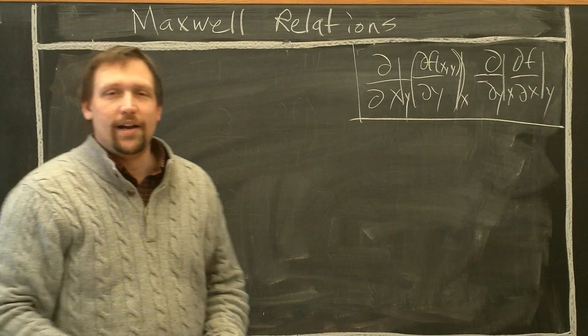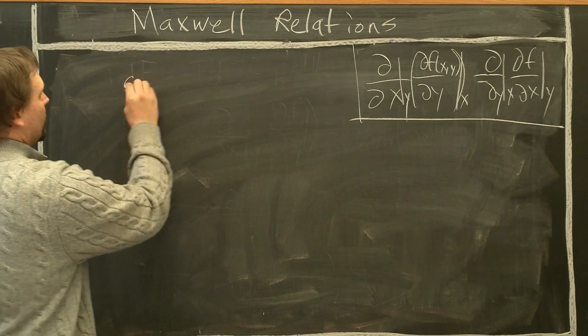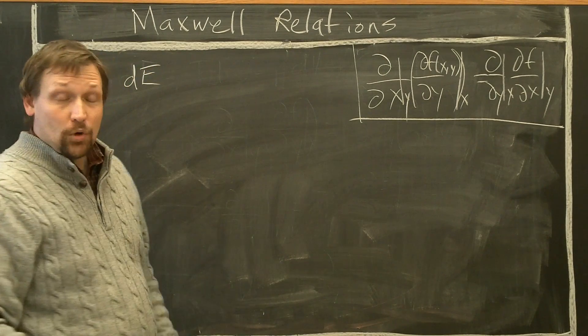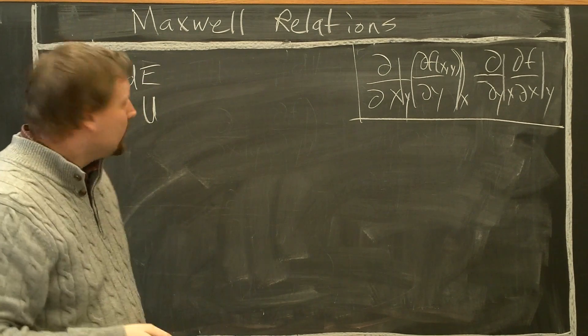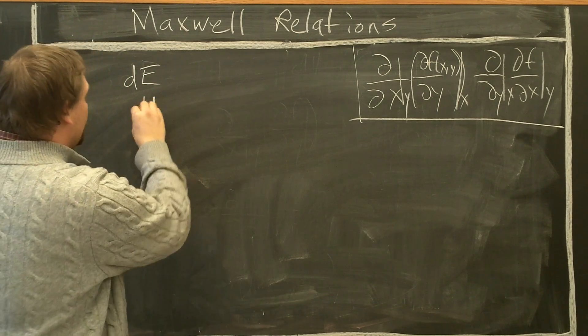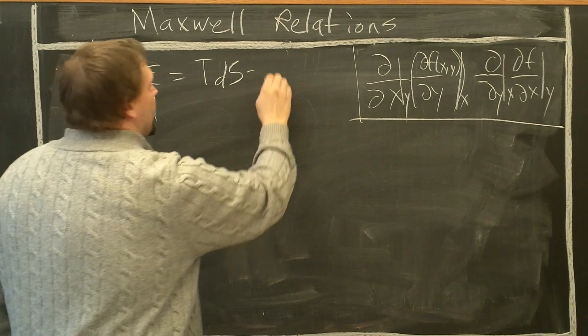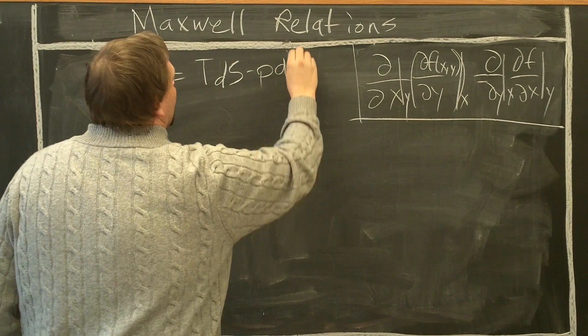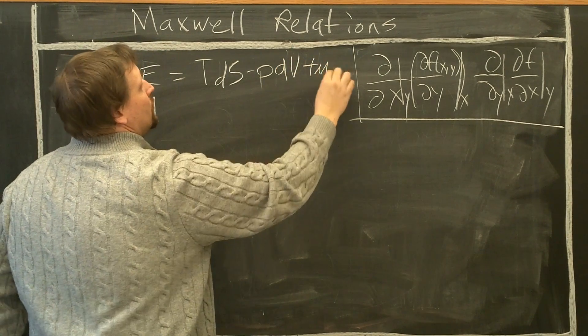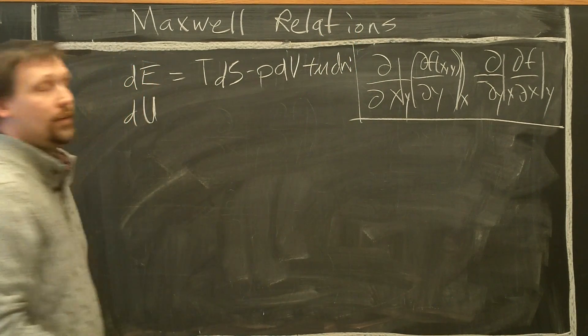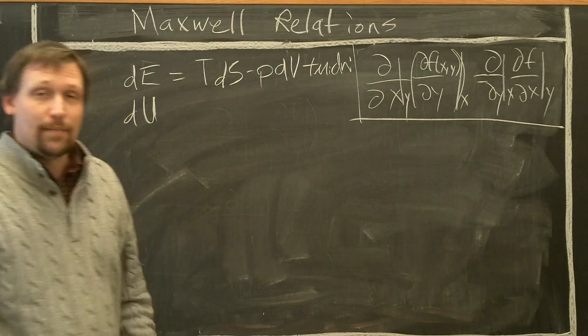Now we're going to apply it to derive Maxwell relations. We'll start with the equation for internal energy. The equation in one of the books is an E, or in the book by Sandler and company, it's a U for internal energy. We know that this can be written down as TdS - PdV + μdN_i, or the summation over all μ_i's and dN_i's.